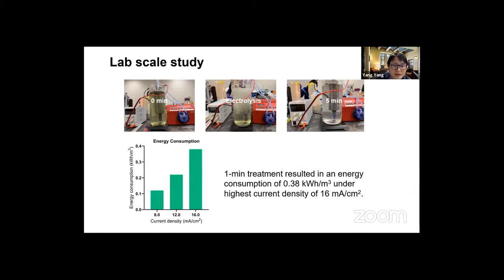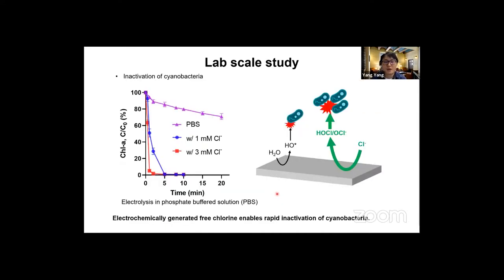In the next step, we picked some lake water, spiked it with the algae cultivated in the lab. After five minute electrolysis, we observed a complete inactivation of the algae and a significant improvement in terms of the visibility of the water. We also calculated the energy consumption. We found that it is absolutely feasible to be applied in the field. The energy consumption is about 0.4 kilowatt hour per cubic meter. That gave us confidence to move forward.